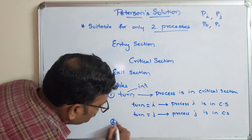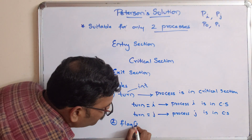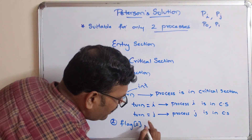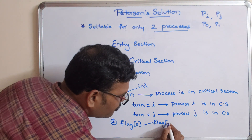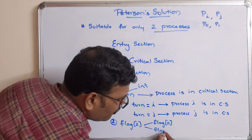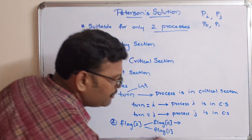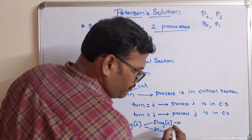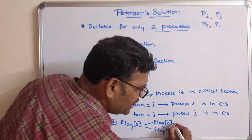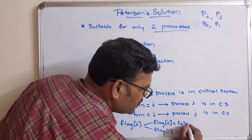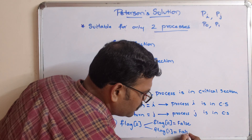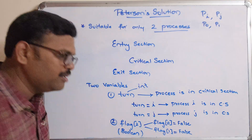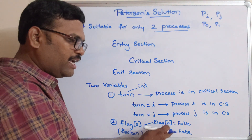The second variable is a flag array of size two, which means it is an array. We can say flag[0] and flag[1]. Let I be 0 and J be 1. Initially, both flag values are false. This is a boolean variable — boolean means only true or false. Initially, both cases have the value false.